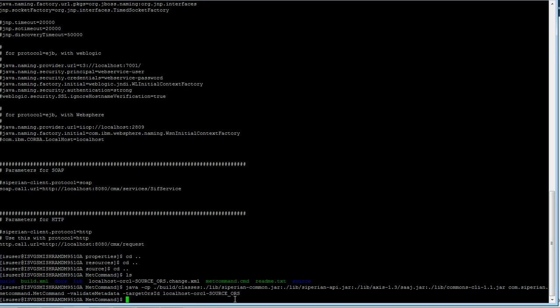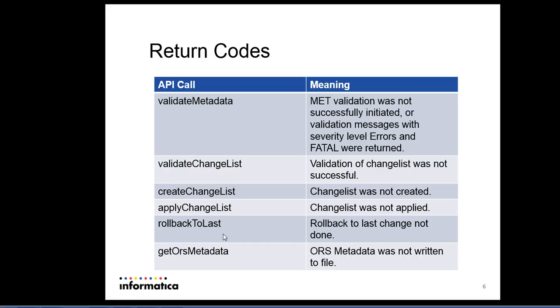You can see that the ORS is validated. To identify the result, we have return codes for the API — the return code is an integer value. If it is 0, the operation is successful; if it returns -1, there is an error. We can track these return codes in a script as well. The same way we perform validate metadata, we can also create a change list, apply a change list, validate a change list, use get ORS metadata to export metadata, and roll back to the last change.